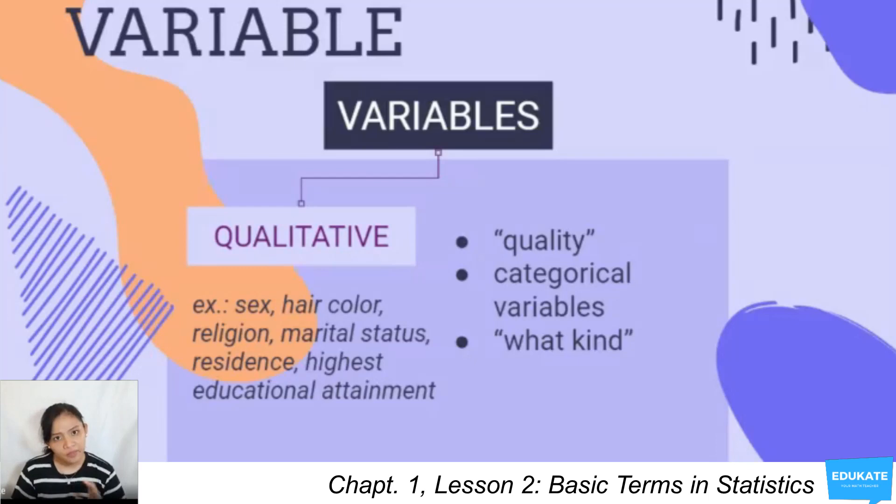Although there can be numeric codes for these examples. For example, for sex, we can assume variable 1 to be male, variable 2 to be female. However, there can be a sense of ordering in qualitative data.